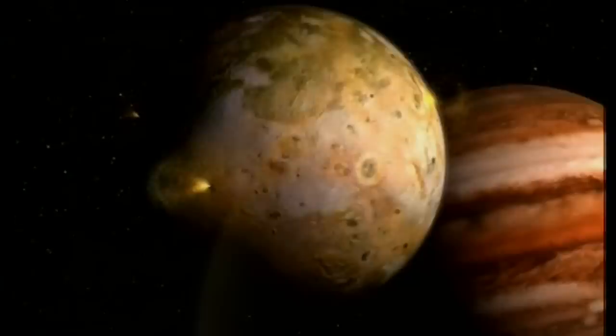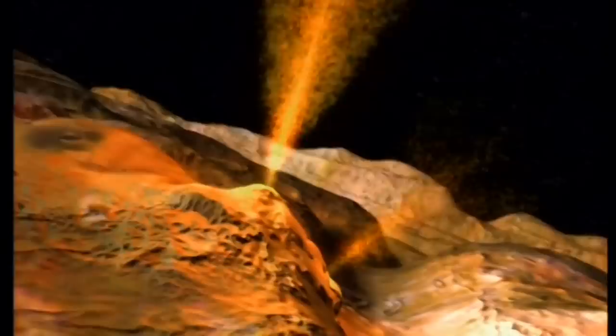De tous les corps du système solaire, Io est celui dont l'activité volcanique est la plus intense. Il est secoué en permanence par des éruptions. La lave recouvre sans cesse sa surface. Des panaches de gaz alimentent son atmosphère en soufre.